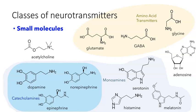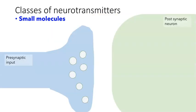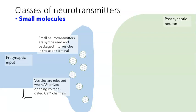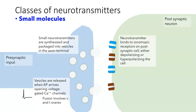Each of these small molecule neurotransmitters has some unique features in how they work. Here I want to talk about some of the basic properties that all small molecule neurotransmitters share. Small molecule neurotransmitters are synthesized and packaged into vesicles at the axon terminal. They'll be released when an action potential arrives, opening voltage-gated calcium channels, which involves a fusion of the two membranes. Once released into the cleft, the neurotransmitter can bind to ionotropic receptors — ion channels on the postsynaptic cells — either depolarizing or hyperpolarizing the cell.